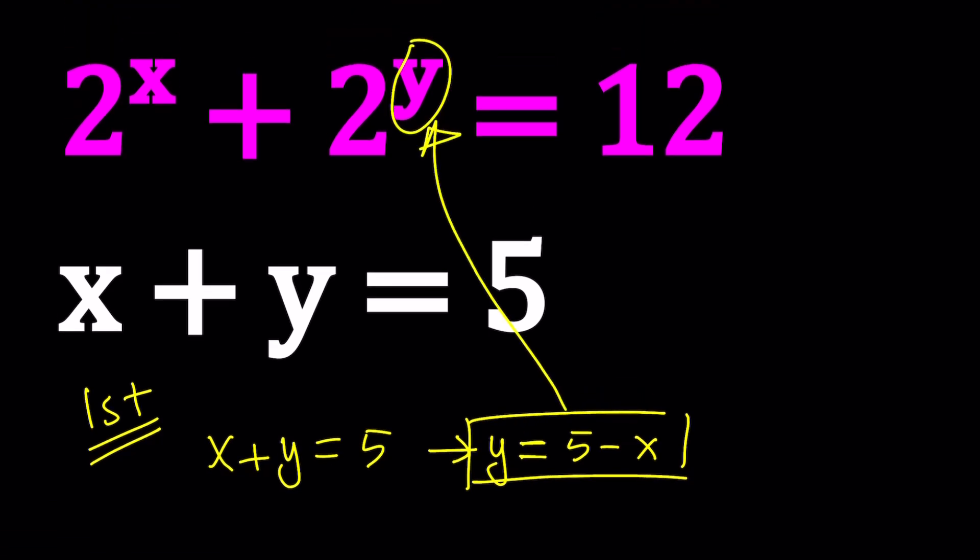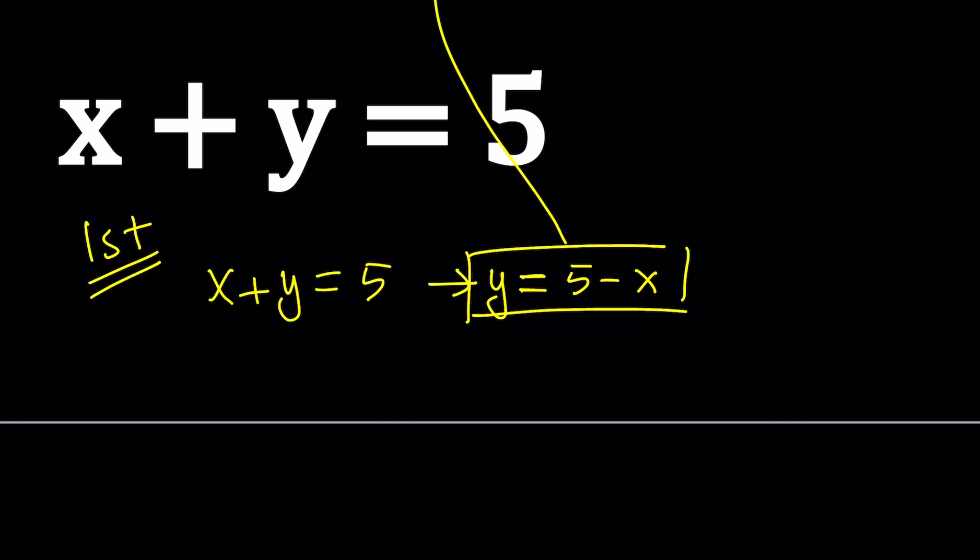So let's go ahead and replace y with that. So we get 2 to the power x plus 2 to the power y equals 2 to the power x plus 2 to the power 5 minus x. And as you know, that is equal to 12. This gives us a really nice equation and we can solve it. It is exponential but an easy kind.